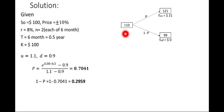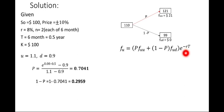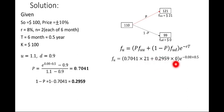Using this information, we calculate the theoretical value of f_u with the formula: f_u = (p × f_uu + (1−p) × f_ud) × e^(−rT). Plugging in: (0.7041 × 21 + 0.2959 × 0) × e^(−0.08 × 0.5), which gives a theoretical value of f_u = 14.2063.